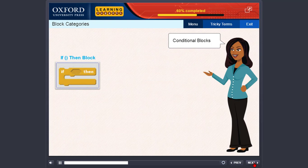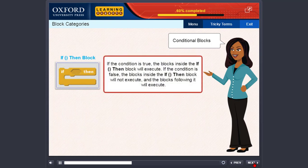If then block. If the condition is true, the blocks inside the if then block will execute. If the condition is false, the blocks inside the if then block will not execute and the blocks following it will execute.